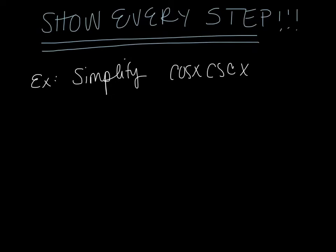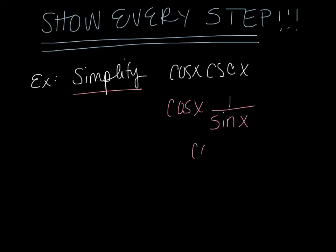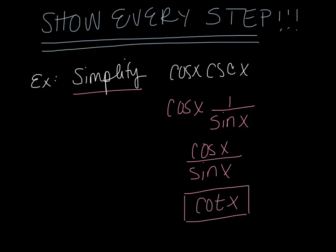For simplifying — this was what we talked about in 7.1 — there's no equals sign here, so we're just trying to rewrite the expression in a simplified form. We have cosine, and cosecant I'm going to replace with 1 over sine x. So this becomes cosine x over sine x, which from our quotient identities is cotangent x. So the simplified form is cotangent x.